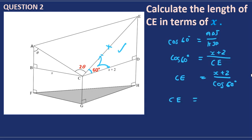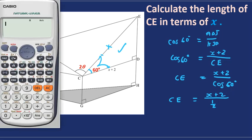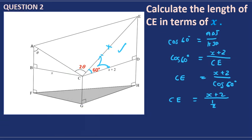To simplify CE further, cosine of 60 is a special angle equal to a half — you can verify with your special triangle or calculator. Dividing x plus 2 by a half: x divided by a half is 2x, and 2 divided by a half is 4. So CE equals 2x plus 4.